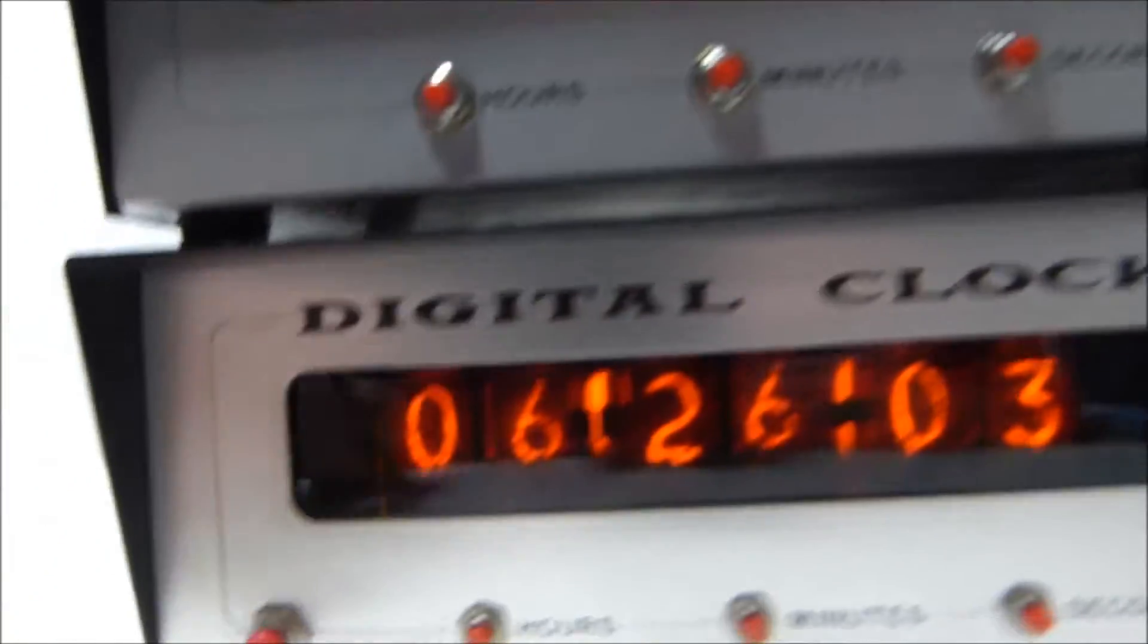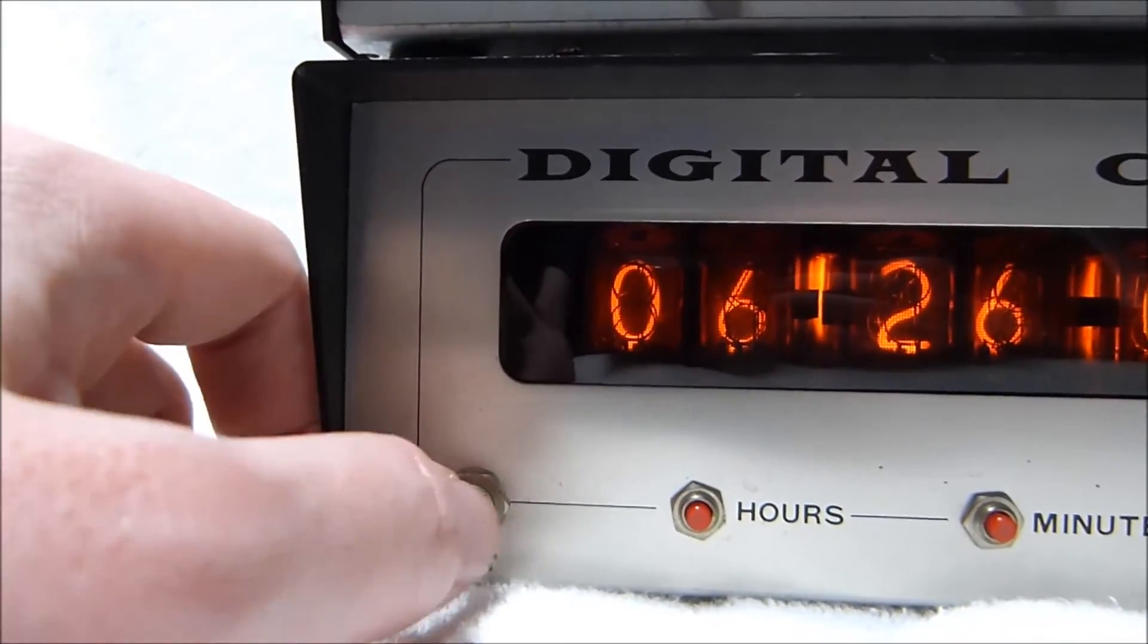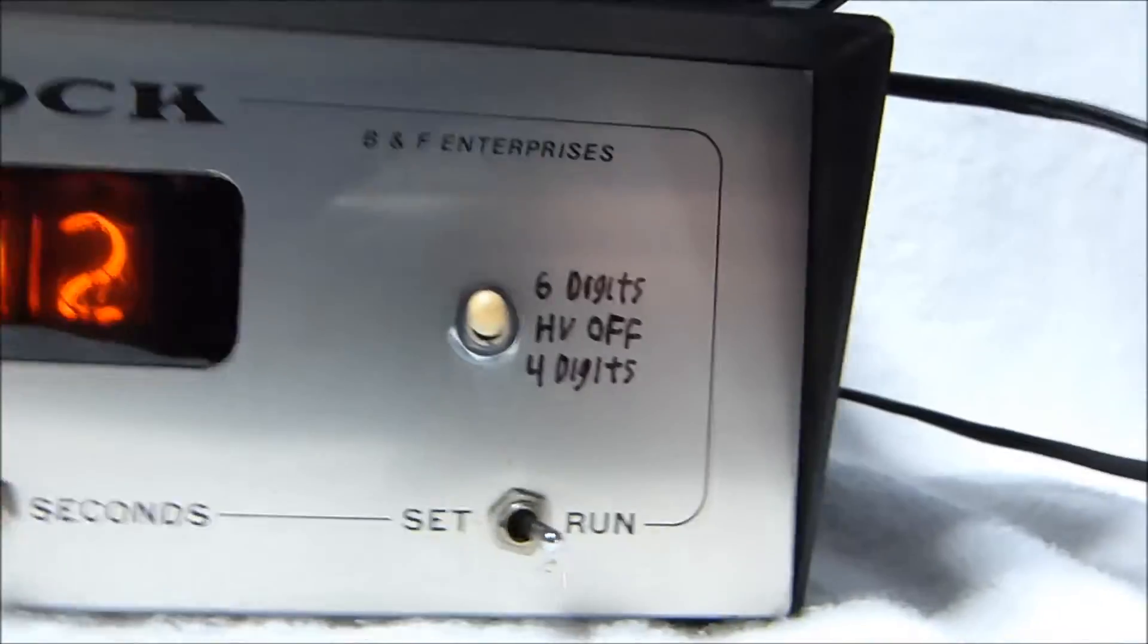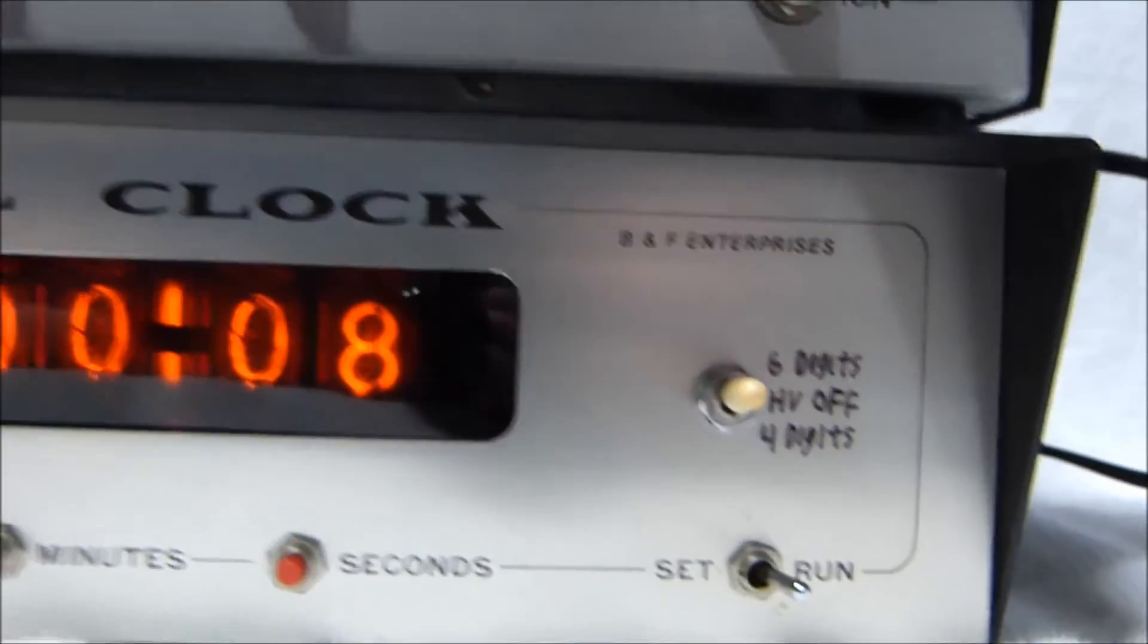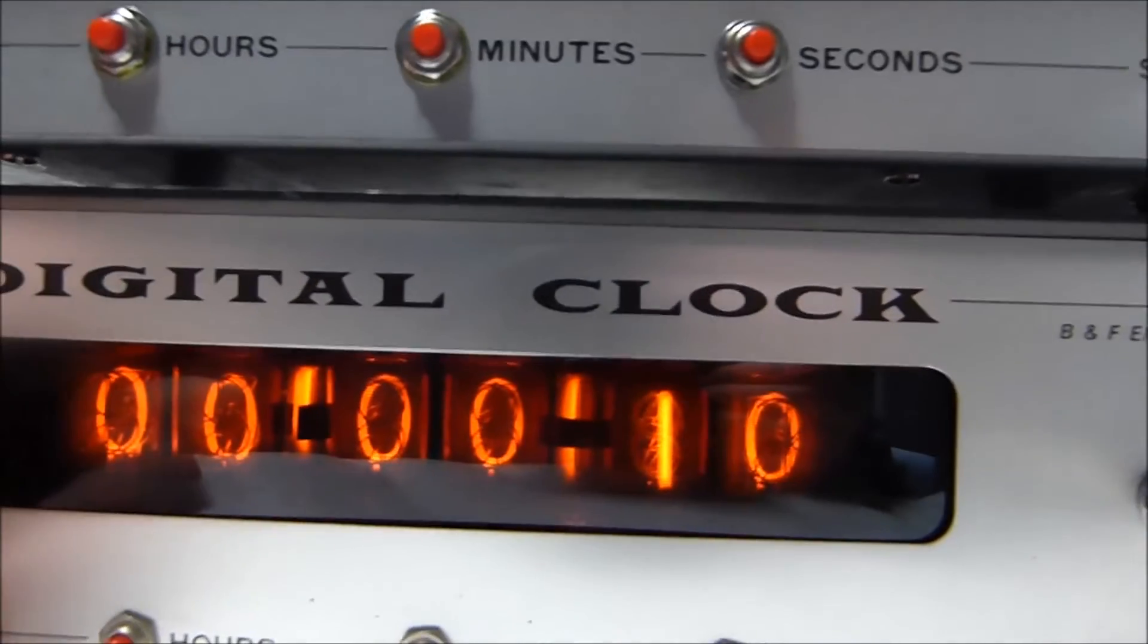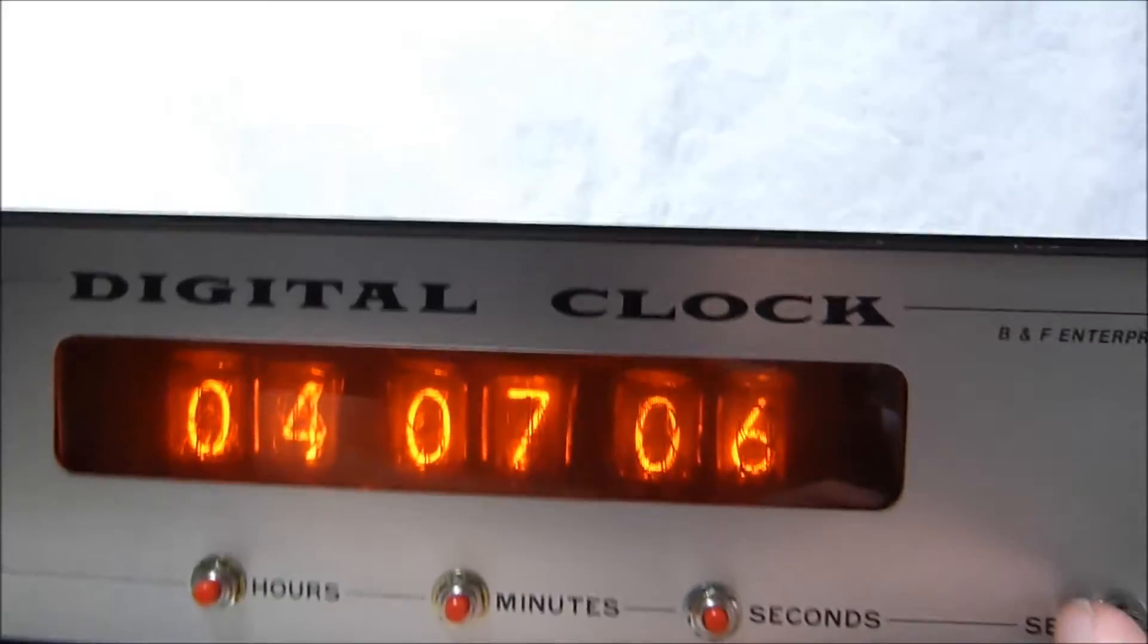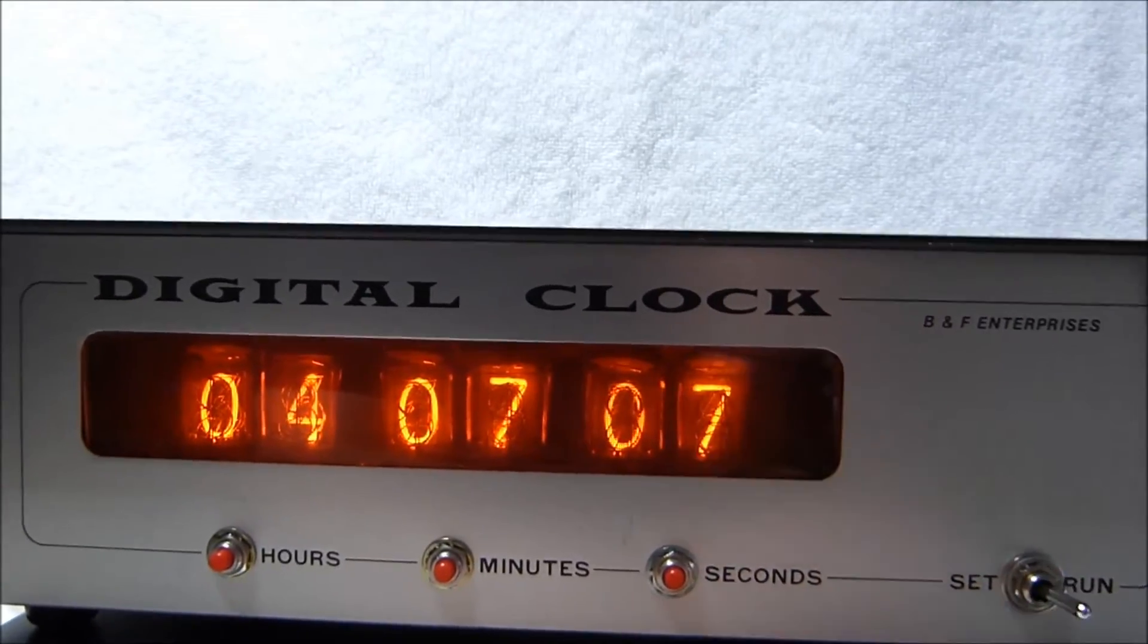This lower one has an added reset control. The button was unlabeled - that's my writing there - but hitting that zeroes the clock even with it in run mode. Annoyingly it could probably be modified to be interlocked on the switch, but I spent literally hours fixing this thing and called it done once I had it running. Once you're done setting the clock, you just slide that switch back over to run and it starts counting once more.